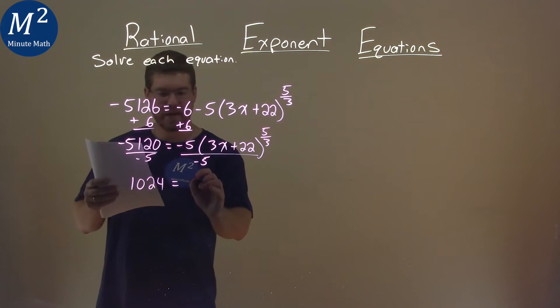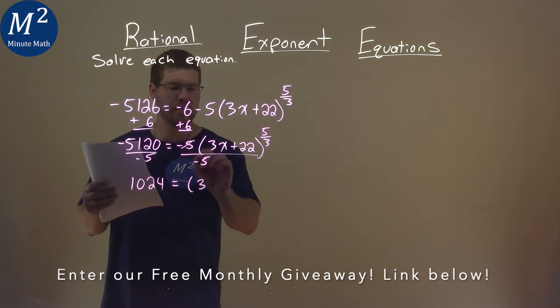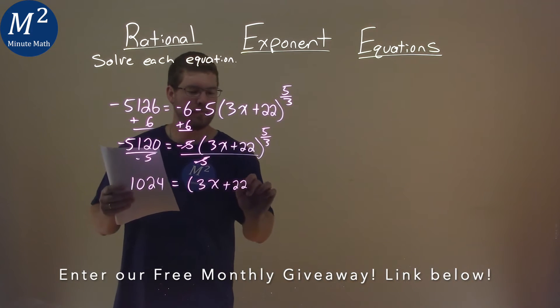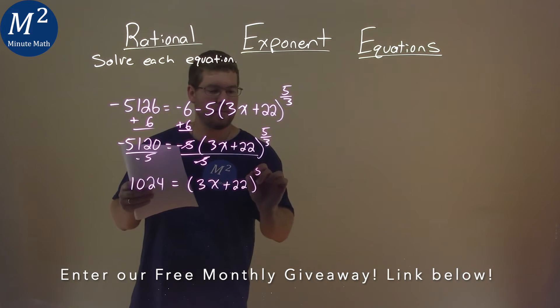That equals everything on the right that's left—this is canceled—so 3x plus 22, all to the 5/3 power.